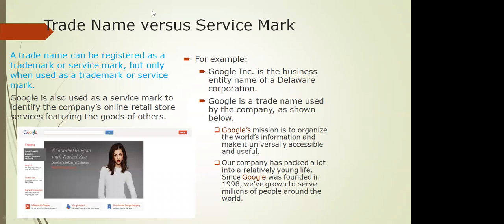The difference between a trade name and a service mark: a trade name can be registered as a trademark or service mark, but only when used as such. For example, Google is used as a service mark to identify Google's online services, but Google also represents the trade name of the business entity Google Inc. When people say 'Google karo,' the trade name has been used to distinguish the niche services provided. So a trade name like Google can be used as a service mark or a trademark and vice versa.